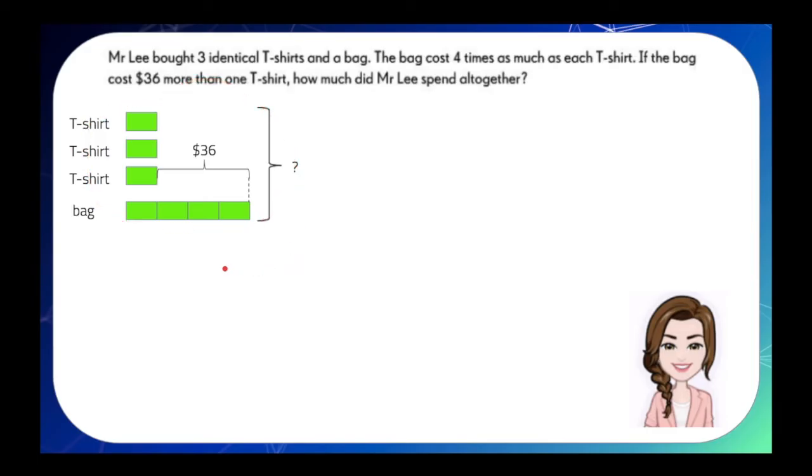Looking at our model, we can easily say that there are seven equal units here. But we cannot just simply divide it by seven since the total amount of the items is missing. So, let's look for another clue in our model.